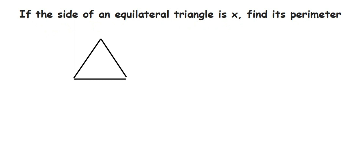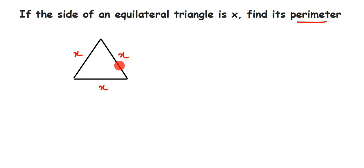Suppose this equilateral triangle has one side equal to x. Since it's equilateral, all sides will be equal to x. We have to find the perimeter — the perimeter is nothing but the boundary of any given polygon, so we add all the sides of the triangle to get the perimeter.